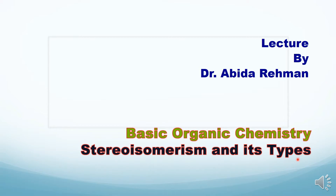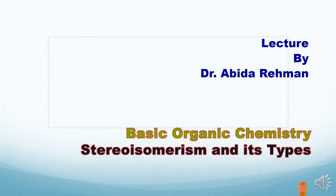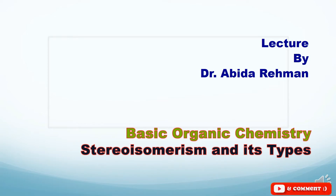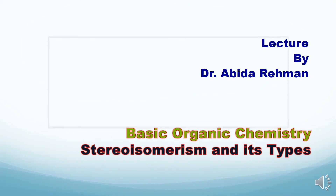In the previous lecture I talked about isomerism and its types. Stereo isomerism is one of the types of isomerism. If you wish to get the link of the previous lecture, I will drop it in the description below. Links to the notes for these lectures are also available in the description.